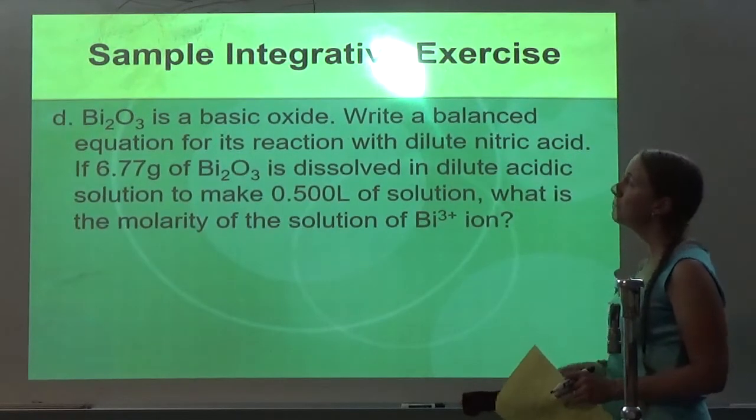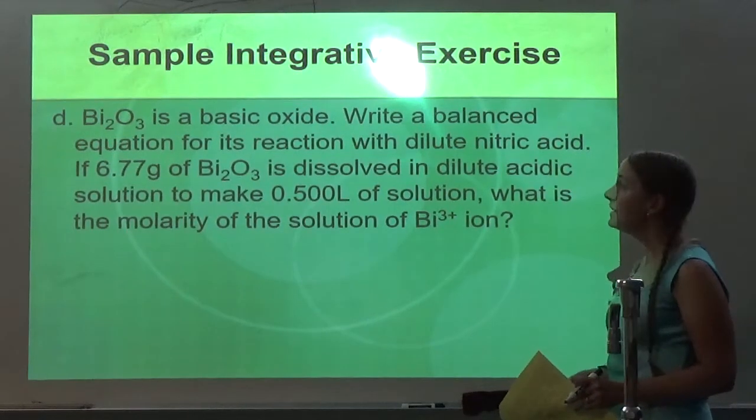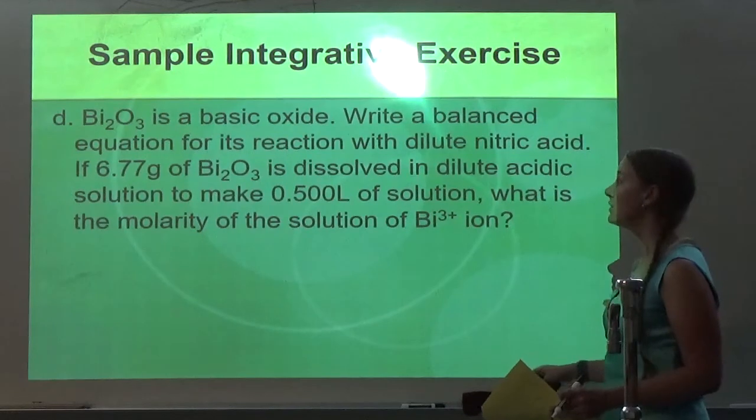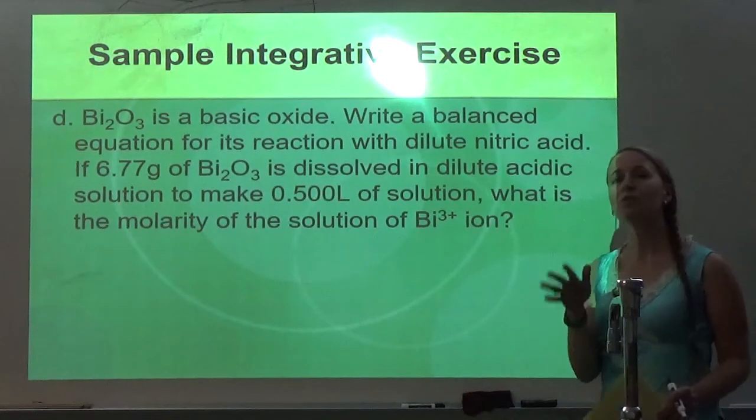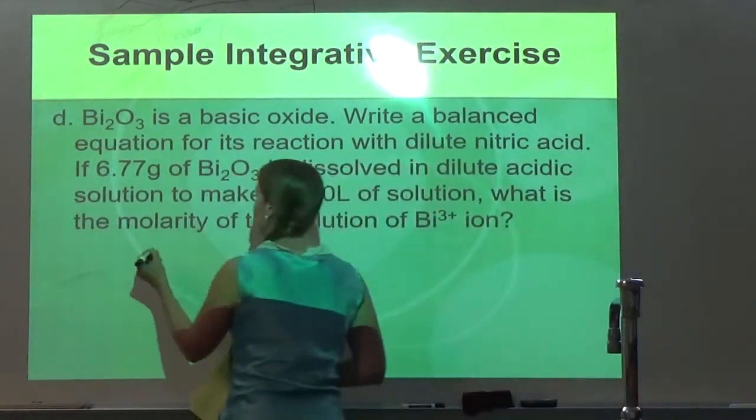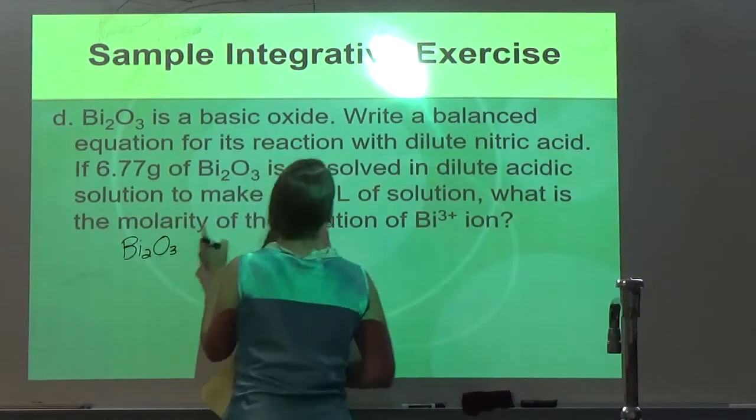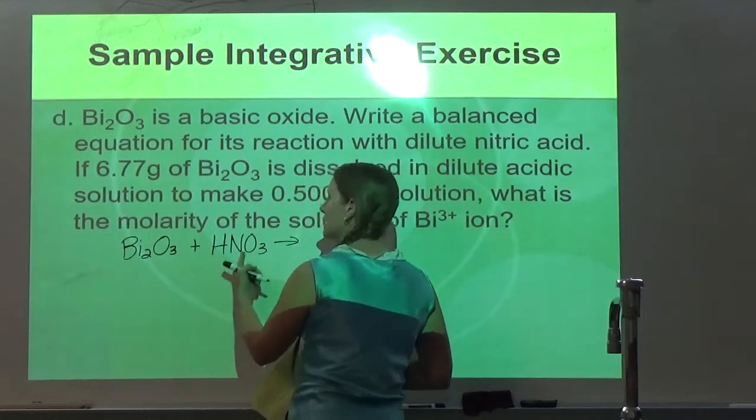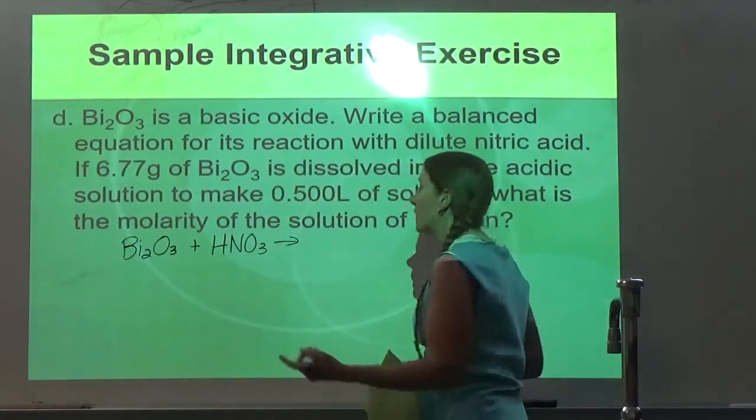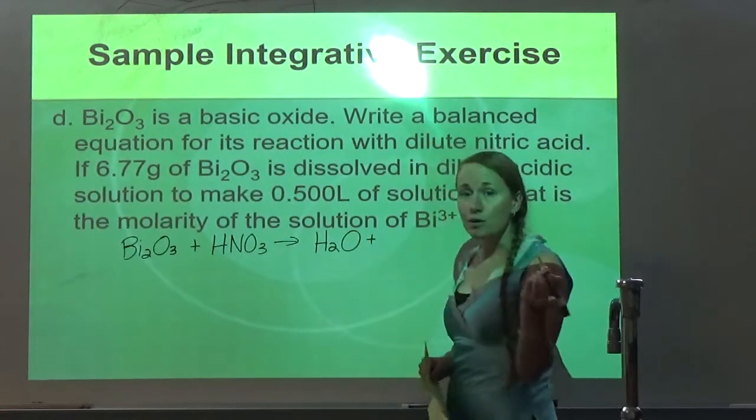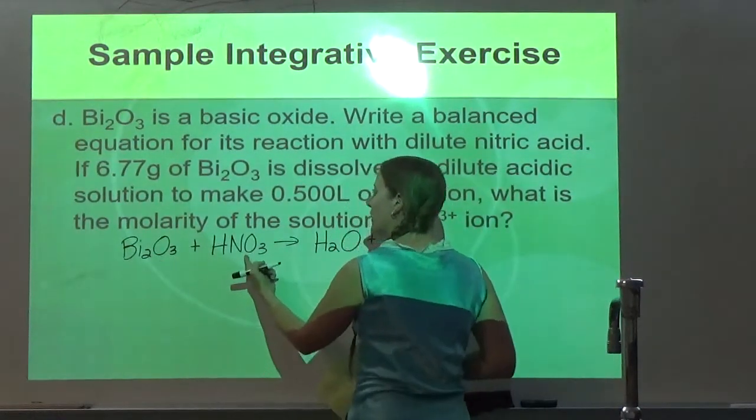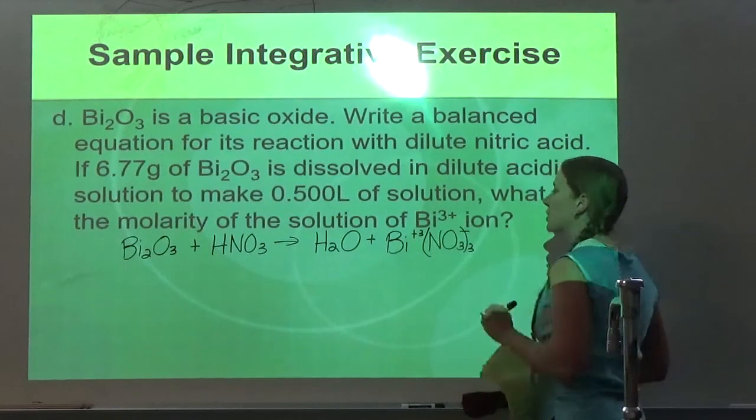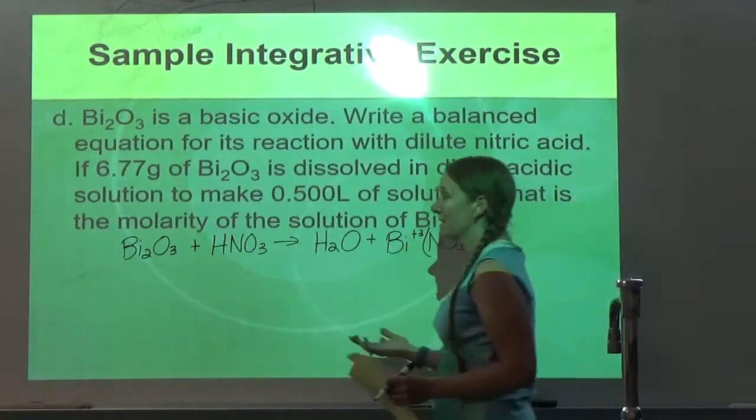So next it says Bi2O3 is a basic oxide. Write a balanced equation for its reaction with dilute nitric acid. So we have Bi2O3 and we are reacting it with nitric acid. We're just going to treat it like double displacement. We're going to bond the Bi with the NO3 and we're going to bond the H with the O to make water. So we'll go ahead and do the H and the O to make water because that's the easier part. So now Bi is going to be with NO3. Bi has a positive 3 charge and NO3 has a negative 1 charge. So I need to balance my charges by putting 3 nitrates there.